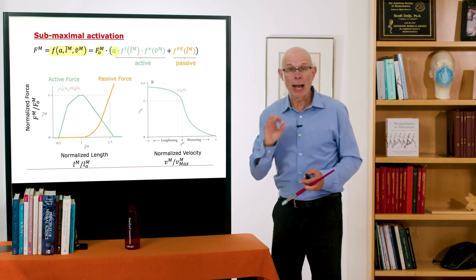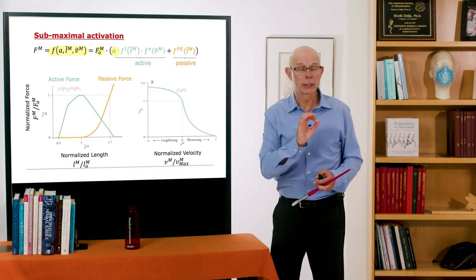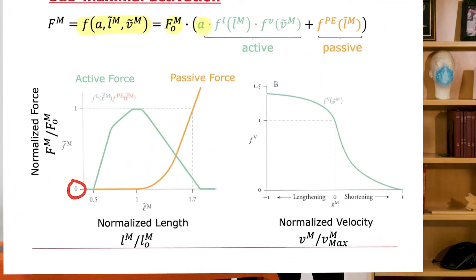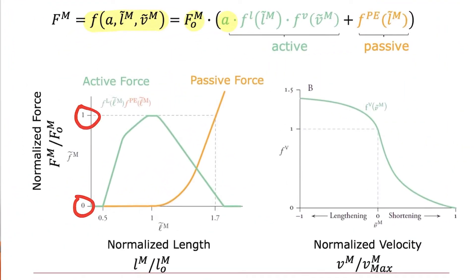Activation, and remember for activation, we're going to get a number between zero and one. Zero is inactive. One is maximally active. And our muscles operate between those two ranges.